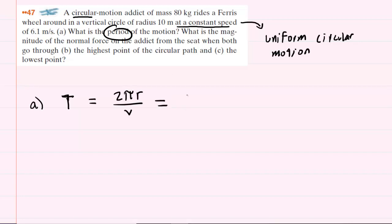We have the radius given to us as 10 meters. We can plug that in. And then we have the speed given to us as 6.1 meters per second. When we punch this into our calculators, we should get approximately 10.3, and then the unit will be in seconds. Period is a measurement of time. It's basically how long it takes the person to go one time around the circular path.